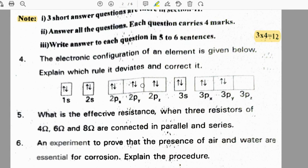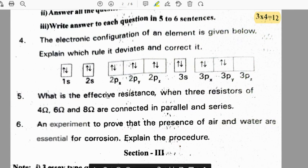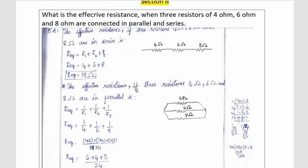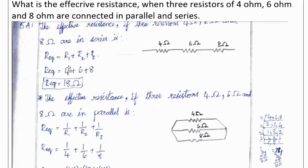What is the effective resistance when 3 resistors of 4 ohms, 6 ohms and 8 ohms are connected in parallel and series? When connected in series, Rs is given by the formula R₁ plus R₂ plus R₃. R₁ is 4 ohms, R₂ is 6 ohms and R₃ is 8 ohms. So total resistance in series is 18 ohms.